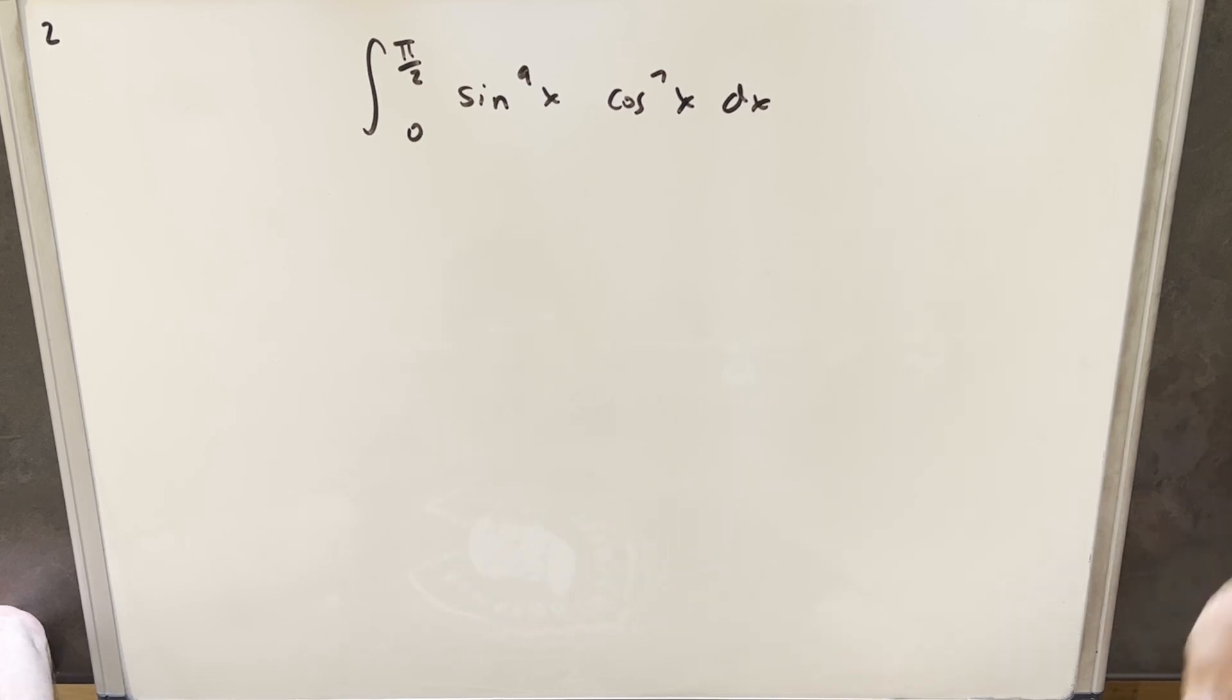And of course we could do this by the normal trig methods. We could strip out a cosine and then convert everything to sine and do a u substitution. But instead what I wanted to do is look at the beta function, particularly the form of the beta function for trig functions.